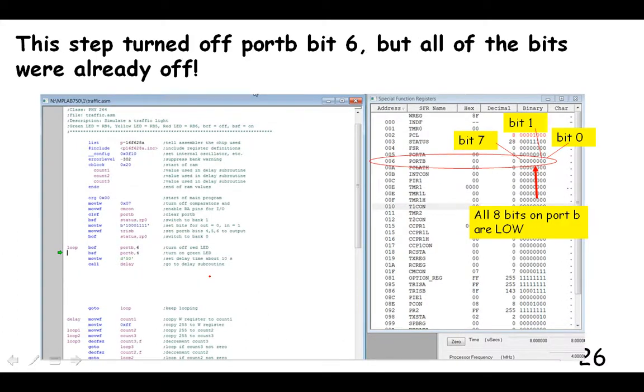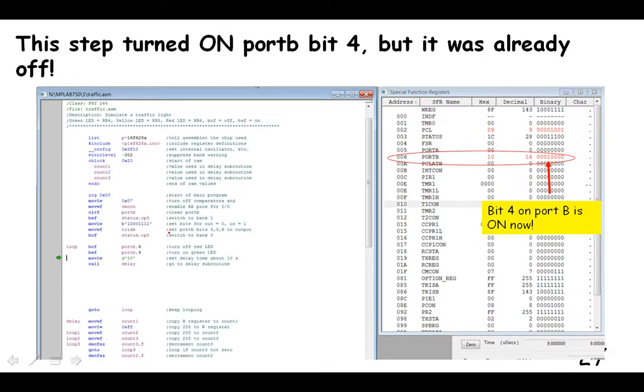All right. So let's step through what is here and I'll show you how it's reflected over here. So BCF, it turned off, well, the red LED was, I guess, on bit six, whatever pin that was. So it turned off bit six, but all these bits were already zero because that's what Buzz did in this part of the program. So they were already zero. So this just tells it to be, tells the zero to stay zero, I guess.